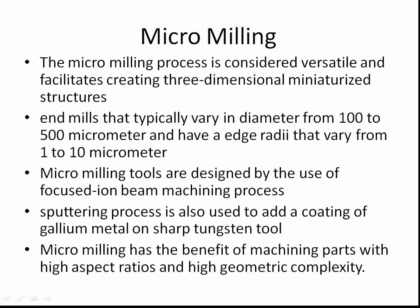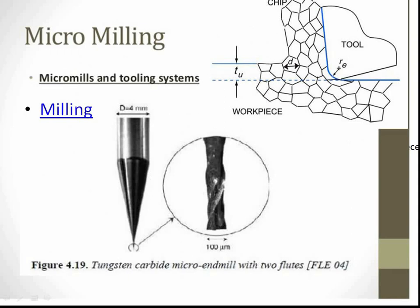Micro-milling is considered versatile and facilitates creating three-dimensional miniaturized structures. End mills typically vary in diameter from 100 to 500 micrometers and have edge radii that vary from 1 to 10 micrometers. Micro-milling tools are designed using the focused ion beam machining process. A sputtering process is also used to add a coating of gallium metal on sharp tungsten tools. Micro-milling has the benefit of machining parts with high aspect ratios and high geometric complexity. A tungsten carbide micro-end mill tool with two flutes illustrates the chip removal mechanism and grain boundaries of the workpiece.